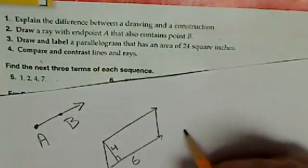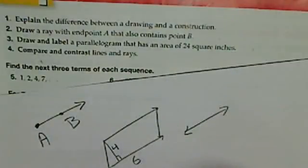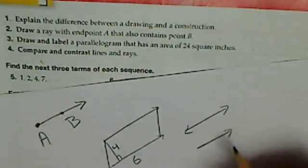A line versus a ray. A line is infinite in both directions. A ray has a starting point and continues on.